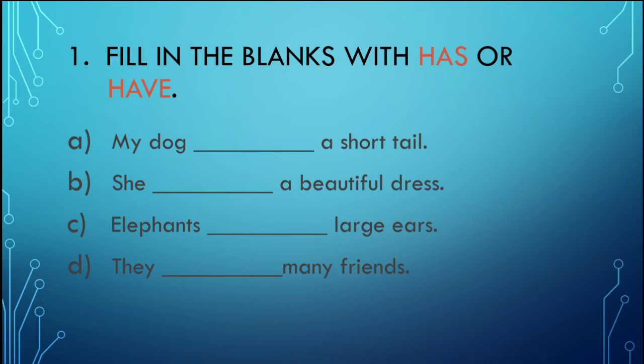First: 'My dog has a soft tail.' My dog is singular, so we use 'has.' Next: 'She has a beautiful dress.' 'She' is singular, so we use 'has.'